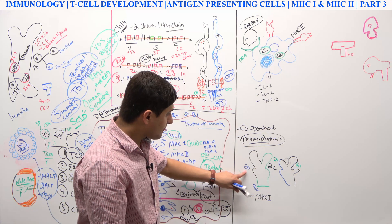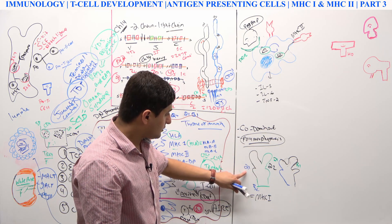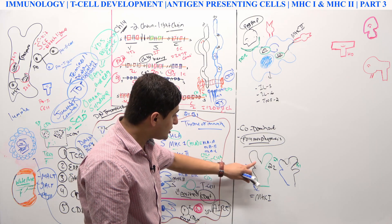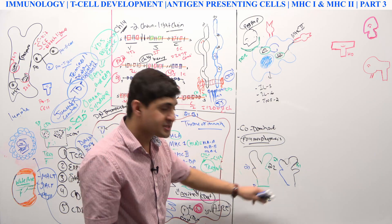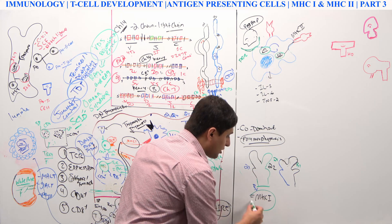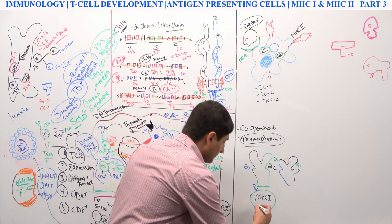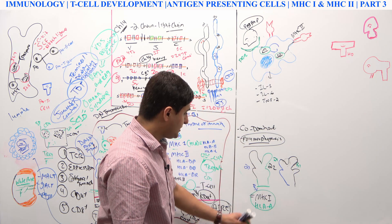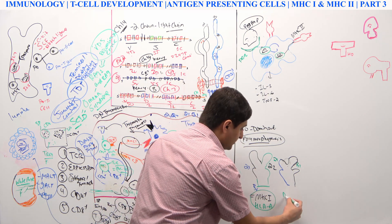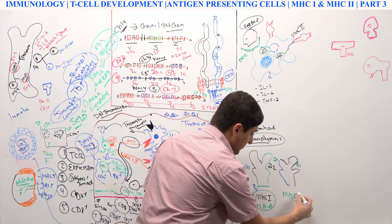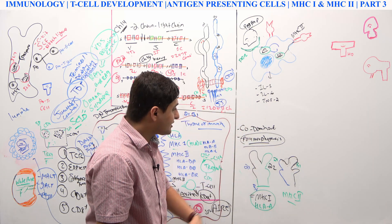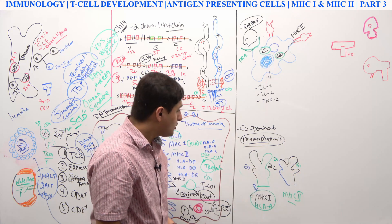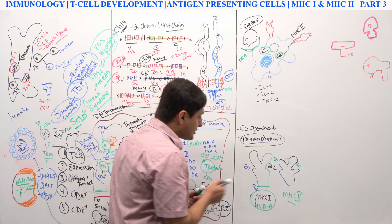For MHC2, if there is an alpha chain and a beta chain — specifically alpha-1 and beta-1 chains — those will make the MHC2 complex. The sequence of amino acids in those alpha-1 and beta-1 chains synthesizes MHC2.